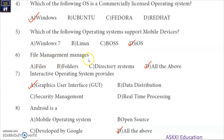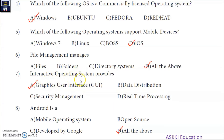Sixth question: File management means — management of files, saving folders, and folders are directories — so all of the above is the correct answer. Seventh question: Interactive operating system provides — the answer is graphical user interface. Eighth question: Android is — Android is the mobile operating system and also an open source system, so all of the above is the correct answer.